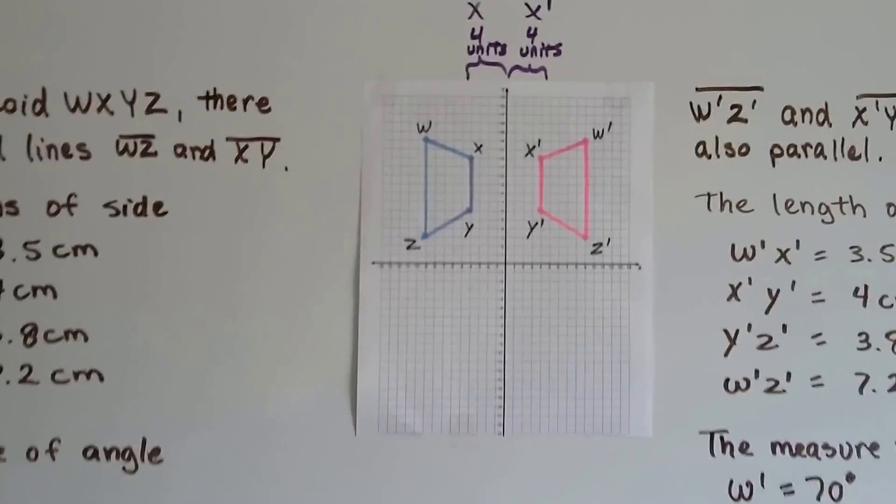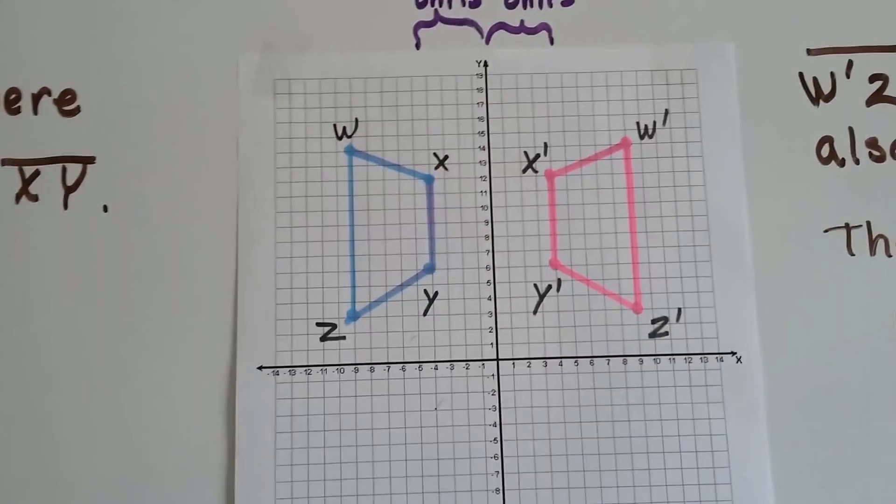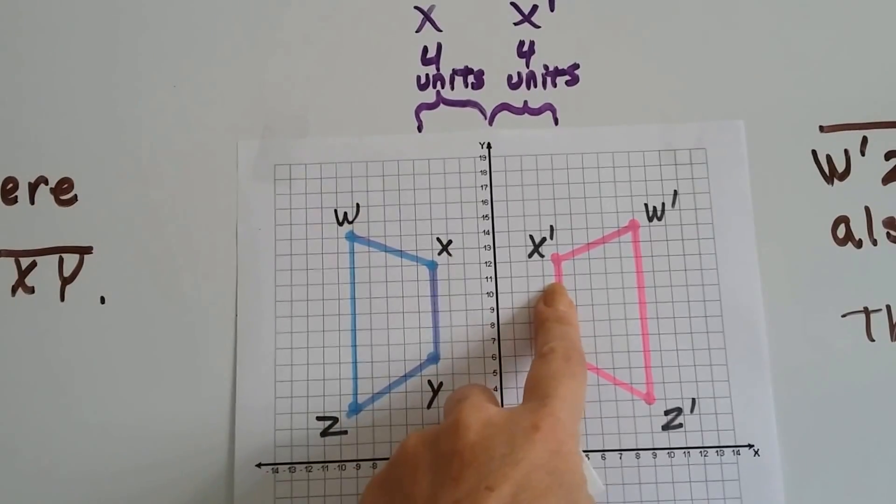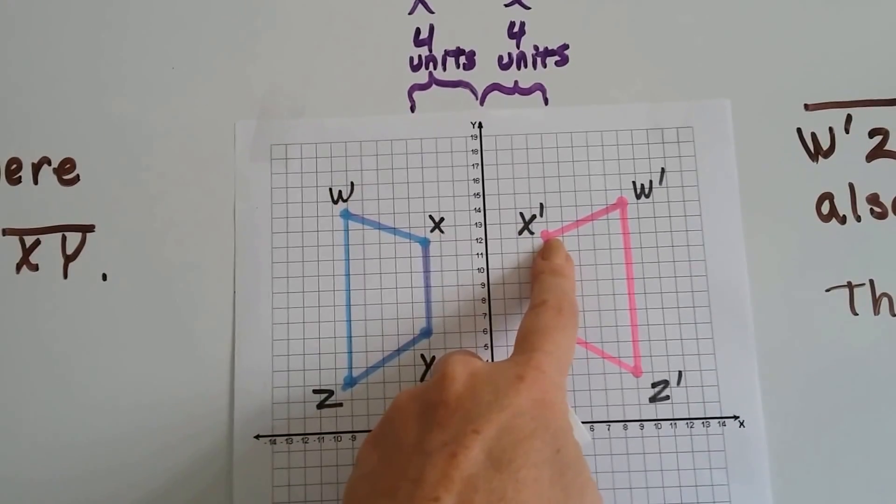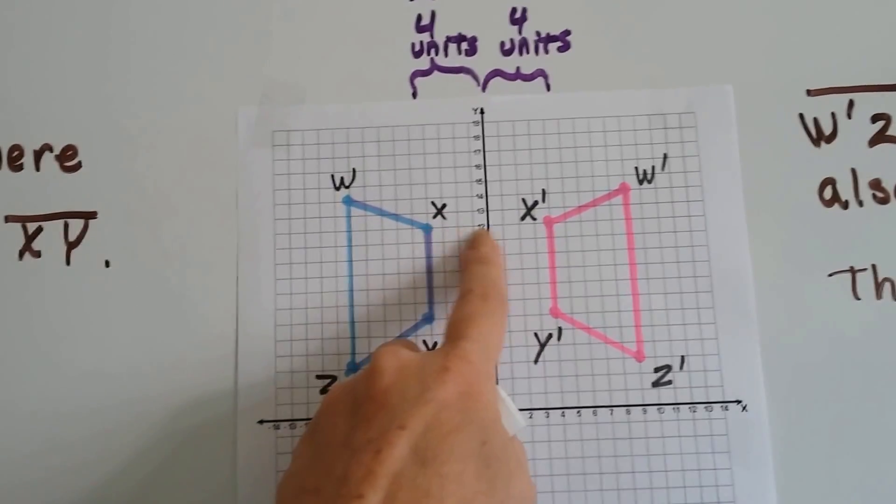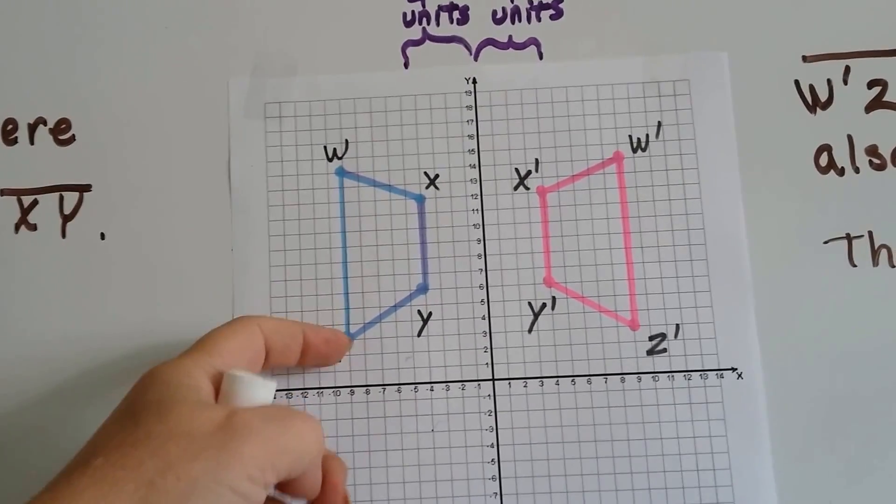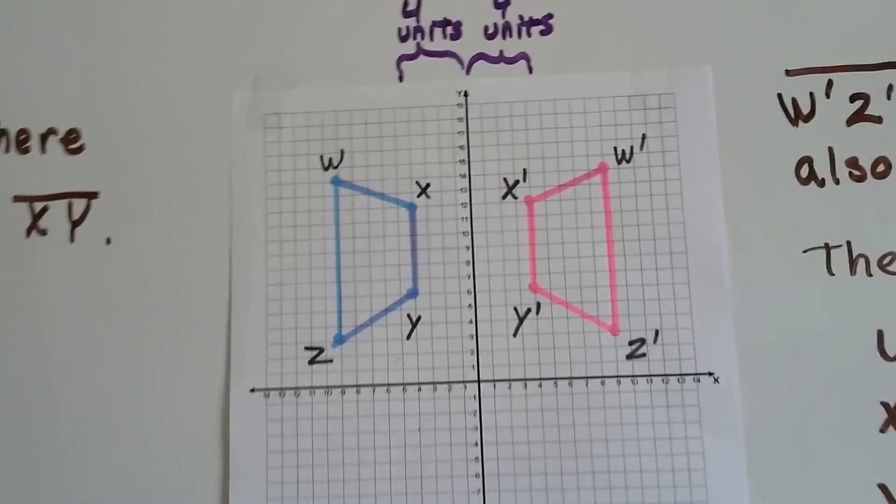One got flipped over. So they're the same distance from the Y-axis. That's the line of reflection. This one is four units away. X prime right here is four units away from Y. But so is X. It's four units away. They're even the same distance. For every point, it matches the points on the reflection.